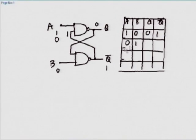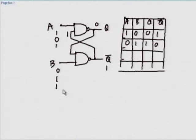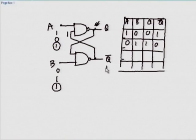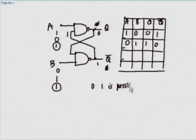Let us take A equal to 0, B equal to 1 - we can show that Q is going to be 1 and Q bar is going to be 0. What about A equal to 1, B equal to 1? This state is a little tricky because students are coming across it for the first time. We can show that both 0,1 and 1,0 are possible for Q and Q bar. So which one will prevail depends on what these values were in the past.